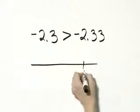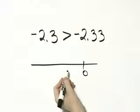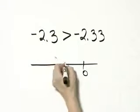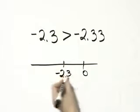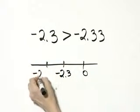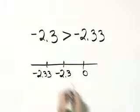Things change on the negative side or to the left of zero. If this is greater, we want to know if negative 2 and 3 tenths is to the right then of negative 2 and 33 hundredths.